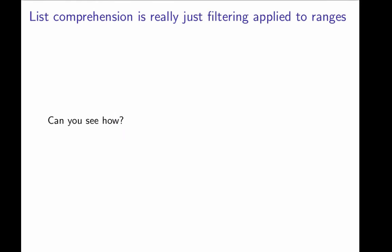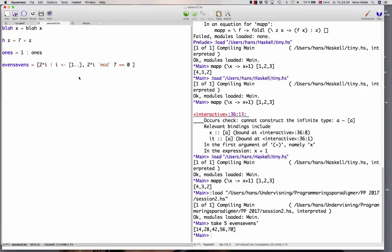Well, list comprehension is in some sense just syntactic sugar. It's just filtering applied to ranges. Can you see how? Think about it for a moment before you continue. So here is an alternative definition and one that will bring out the fact that list comprehension is really just a combination of ranges and filtering.